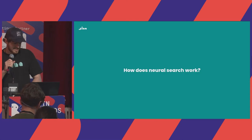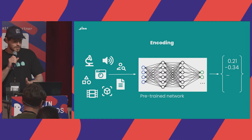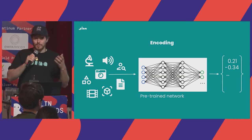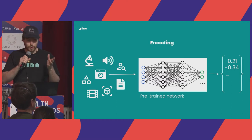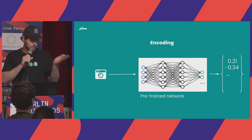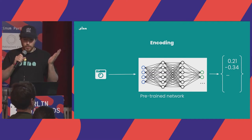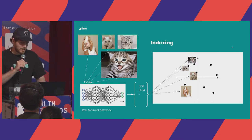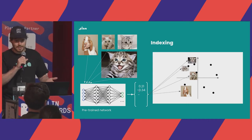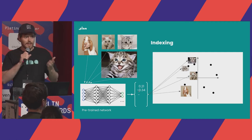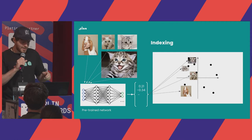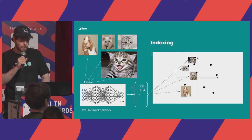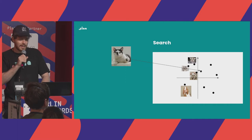So how does neural search work? We have all these different data types, and if we have a network trained on these modalities we can convert them into vectors. Once we have these vectors — for example, images — we convert all images into vector representations, interpreting each value as a dimension. We then arrange these in a latent space, like a coordinate system where each image gets one coordinate, and then we perform a nearest neighbor search.